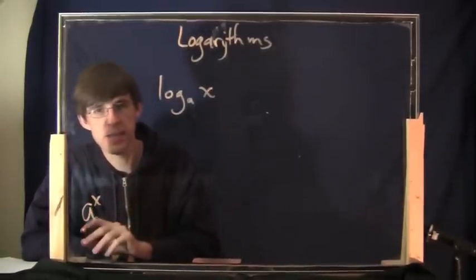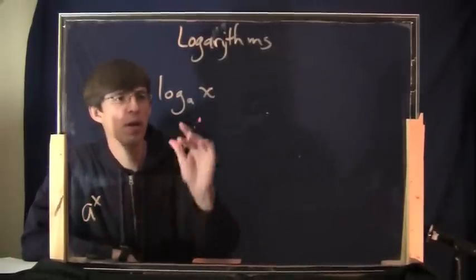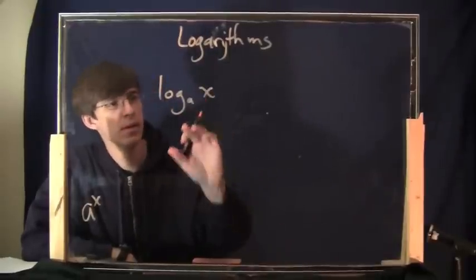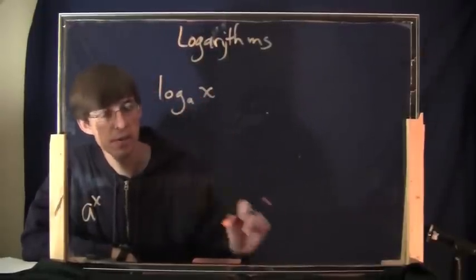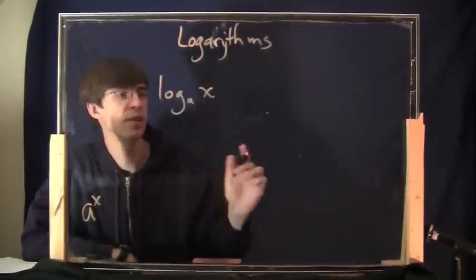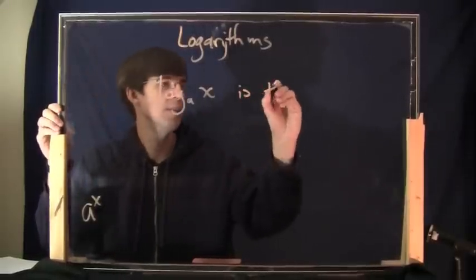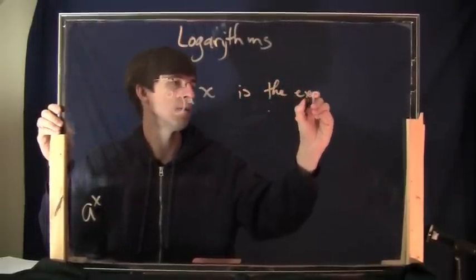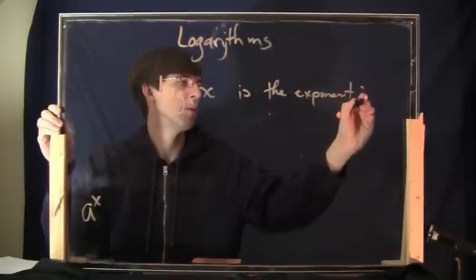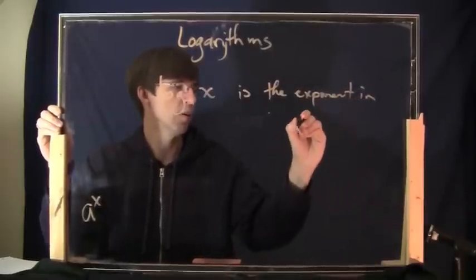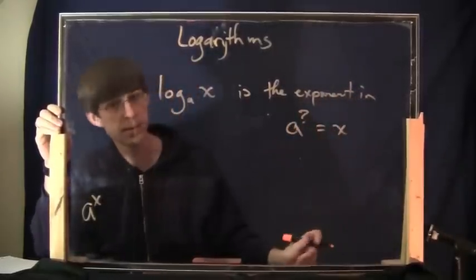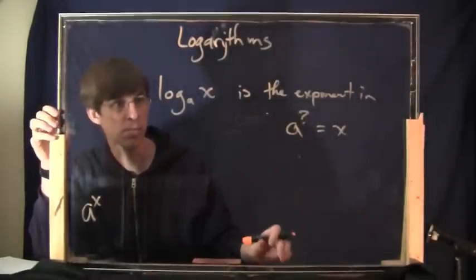That's something like a to the x. a is the base, x is the exponent. Logarithms also have a base. That's the little number that you see down here is the base. Log base a of x. The definition of this, this is the exponent in a to the ? equals x. All right, this is the definition of the logarithm.